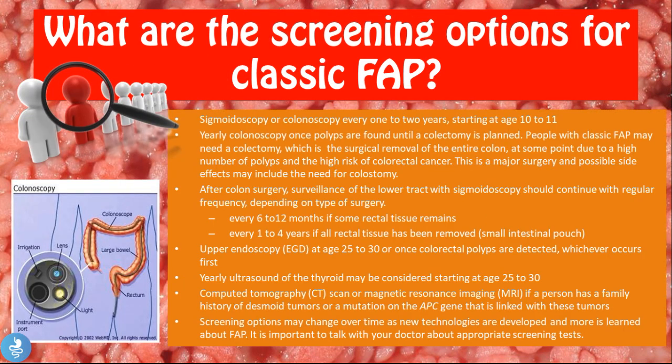Screening options for classic FAP include a sigmoidoscopy or colonoscopy every one to two years starting at age 10 to 11, and yearly colonoscopy once polyps are found until a colectomy is planned. People with classic FAP may need a colectomy — surgical removal of the entire colon — due to the high number of polyps and high risk of colorectal cancer. Possible side effects may include the need for a colostomy.